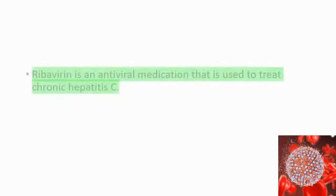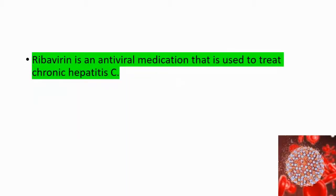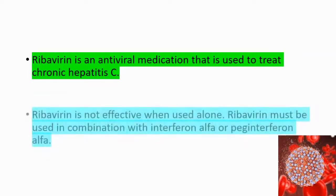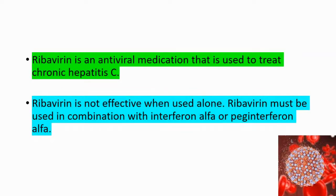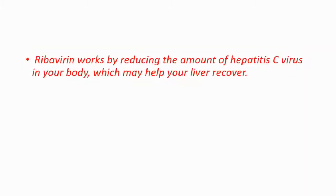Ribavirin is mainly used for treating chronic hepatitis C. It's an antiviral medication and it's not effective when used alone. It must be used in combination with interferon alpha or peg interferon alpha. It works by reducing the amount of hepatitis C in your body, which may help your liver to recover.